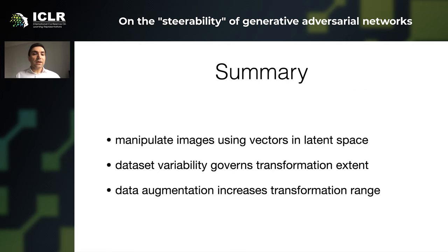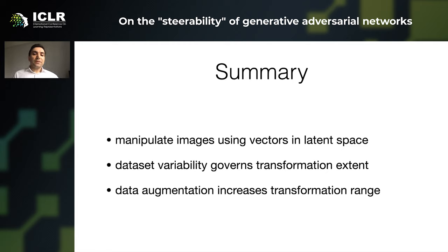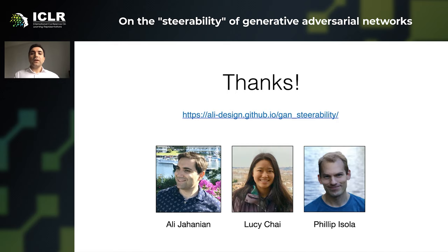To summarize: we can manipulate images using vectors in the latent space; data variability governs transformation effects; and data augmentation increases transformation range. You can check the code on the website. Thank you.